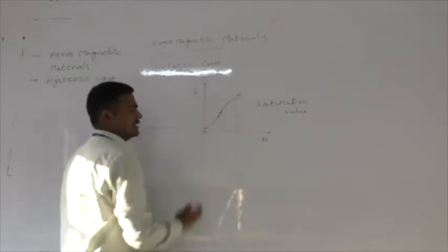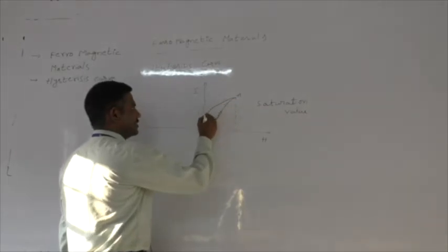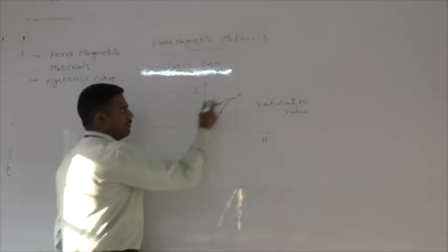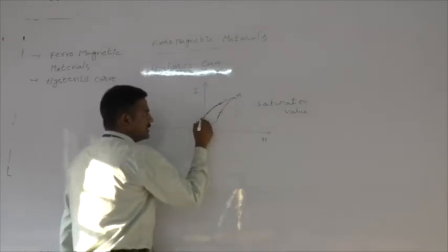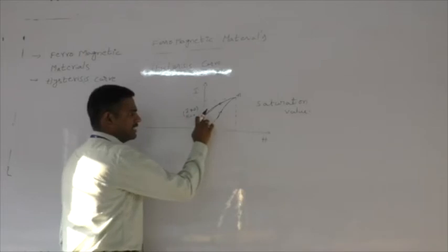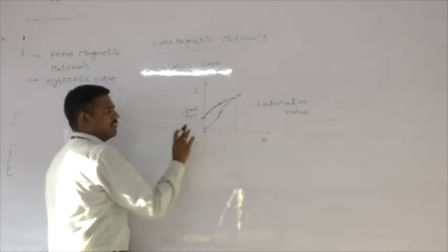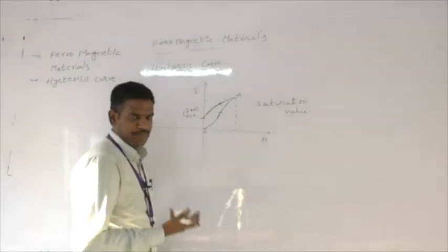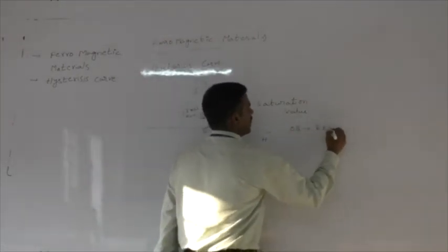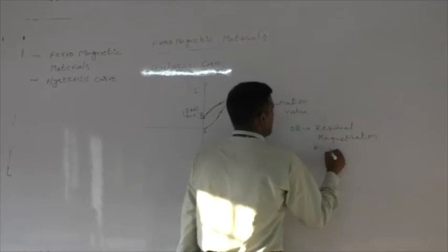If we now start decreasing the magnetizing field intensity, the intensity of magnetization does not follow the same path as before. It follows a new path such that even when the field intensity is zero, the intensity of magnetization is not zero. The amount of magnetization remaining in the specimen even after the external magnetic field is zero is called residual magnetization or retentivity, represented as OB.